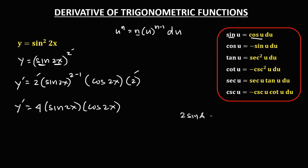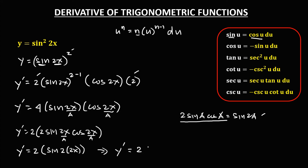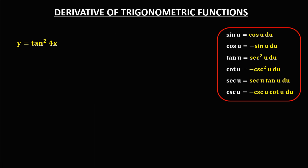Then simplifying, y prime equals — multiply 2 times 2, that's 4 — then times sine 2x, times cosine 2x. Take note that from the double angle identity, 2 sine a cosine a equals sine 2a. So for this given, a is equal to 2x. We have 4 as the same as 2 times 2, then sine 2x times cosine 2x. From this double angle identity, 2 sine a cosine a equals sine 2a, so y prime equals 2 times sine of 2 times 2x, that's sine 4x. Therefore y prime is equal to 2 sine 4x.